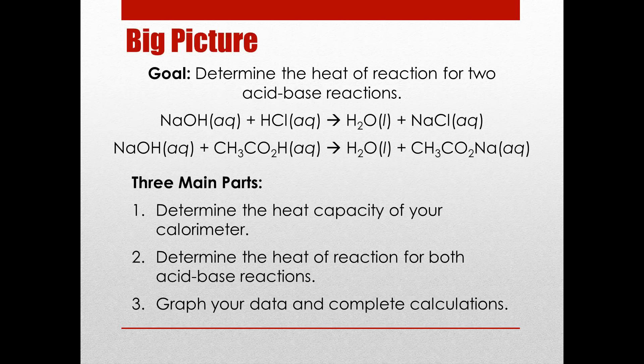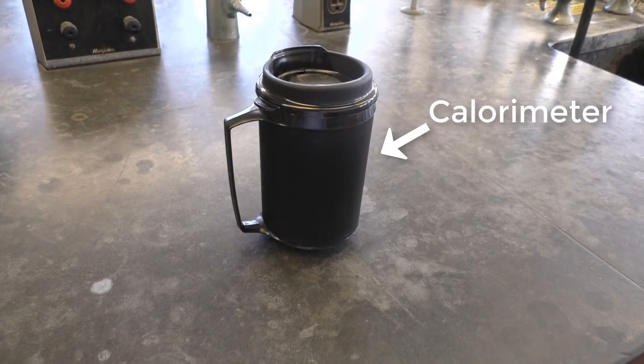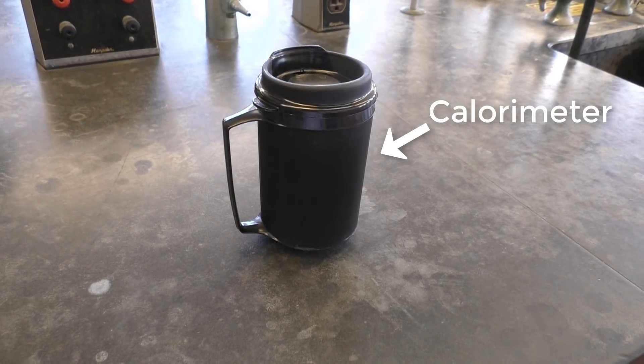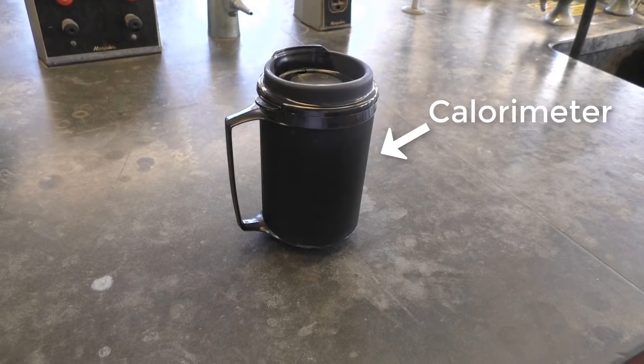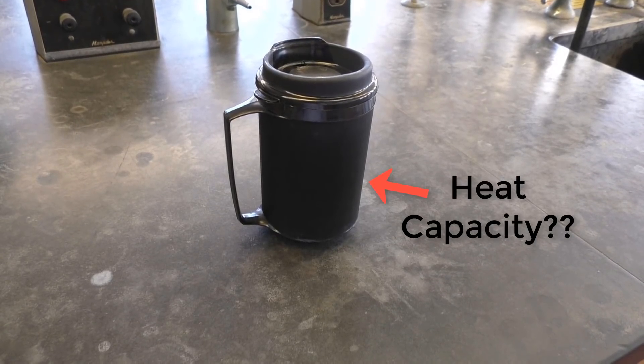To determine the heats of reaction, you'll need to plot or graph your data to then perform some necessary calculations. To accurately measure how much heat is released or absorbed by our acid-base reactions today, their heats of reaction, we first have to find out how much heat is lost to our calorimeter. This is the heat capacity of your calorimeter.